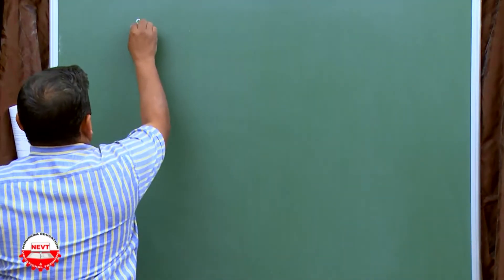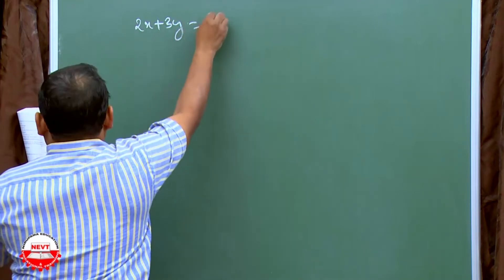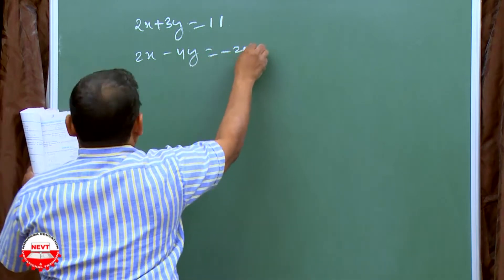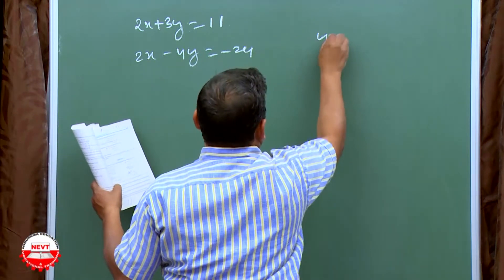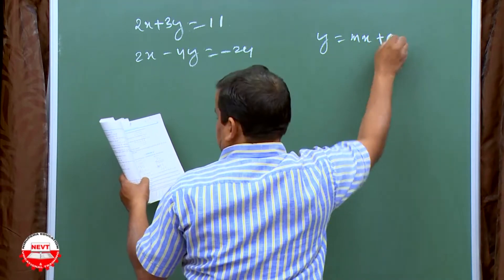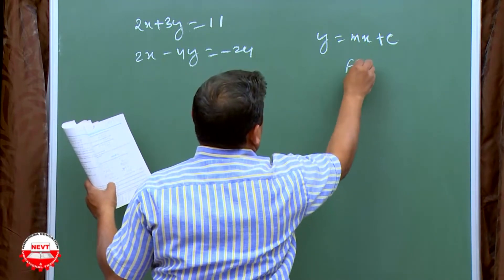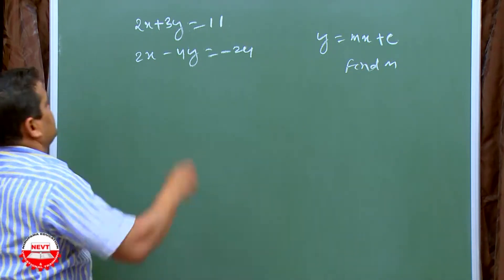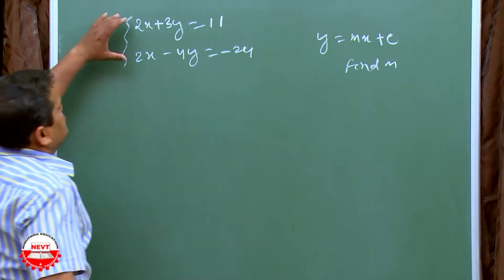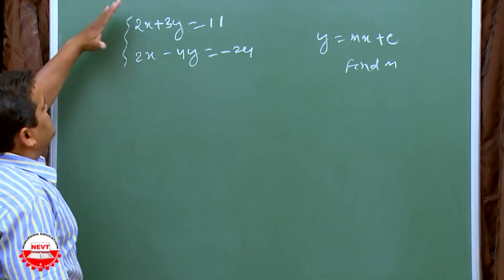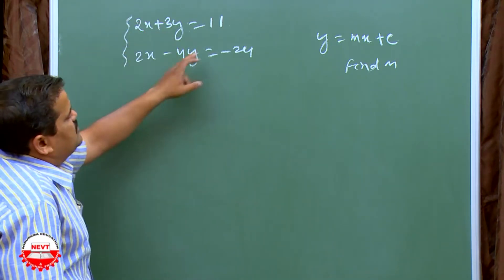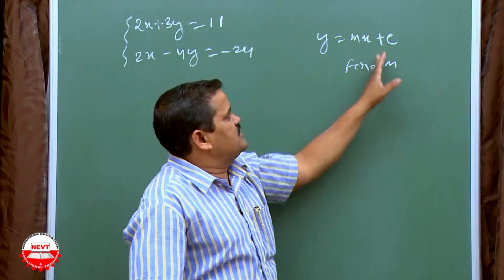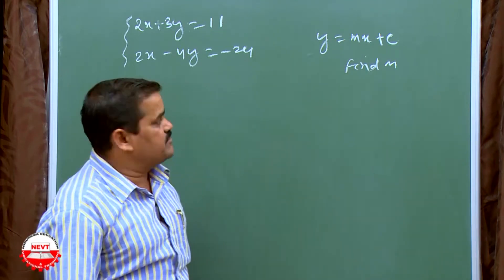Question 2: Solve 2X plus 3Y is equal to 11 and 2X minus 4Y is equal to minus 24. Hence find the value of M in Y is equal to MX plus C. These two equations can be solved easily by substitution or elimination method. Once you find the values of X and Y, substitute them into Y equals MX plus C to get the value of M.